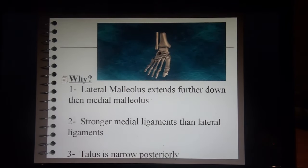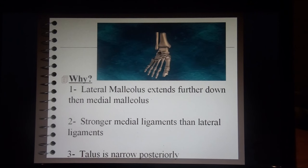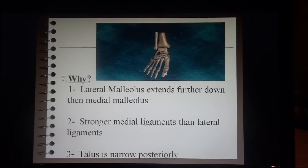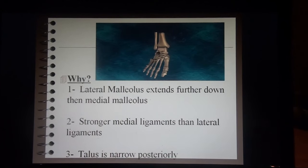Why are lateral ankle sprains the most common? First, our lateral malleolus extends further down than the medial malleolus — you can see in the picture that the fibular part of the bone juts down further. Second, medial ligaments are stronger than lateral ligaments — the deltoid ligaments on the inside are much stronger than those on the outside. Third, our talus is narrow posteriorly, which also makes us susceptible to an inversion ankle sprain.